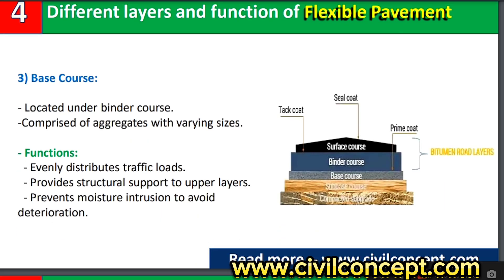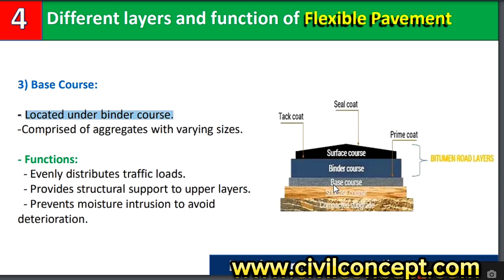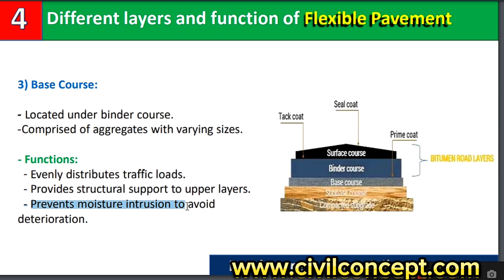Number three is the base course, located under the binder course. It is comprised of aggregates of varying sizes. The function of the base course is to evenly distribute traffic loads, provide structural support to the upper layers, and prevent moisture infiltration. When water enters the layers, it may cause the layers to swell or shrink, potentially collapsing or damaging the surface course and the whole flexible pavement.